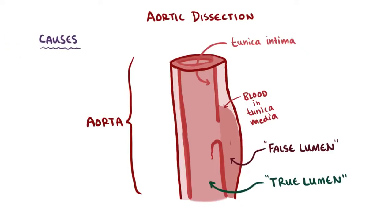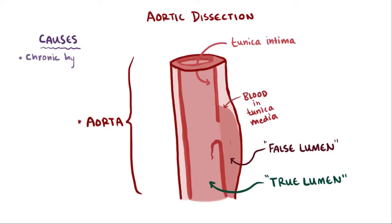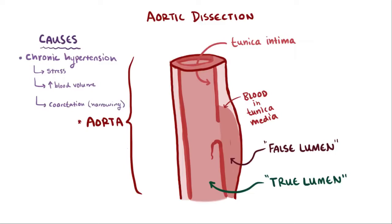Since high pressure is the cause of aortic dissection, it's no surprise that the aorta is the prime target for this problem. Chronic hypertension is the major cause, whether the hypertension is caused by stress or from increased blood plasma volume, like in pregnancy. Blood vessel coarctation, which is the narrowing of a blood vessel, can also cause dissection.